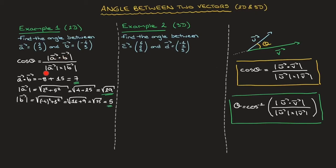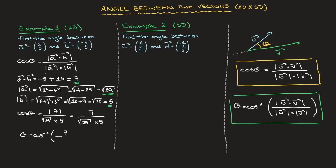Replacing the dot product and the two magnitudes with the values we've just found, we can state that cosine of theta equals the absolute value of 7 over the square root of 29 times 5. Since the absolute value of 7 is just 7, this equals 7 over the square root of 29 times 5. Using the inverse cosine, theta equals arccos of 7 over the square root of 29 times 5.